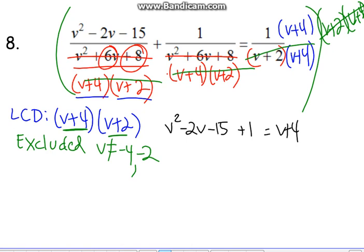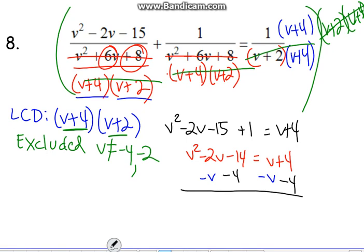Let's combine all our like terms. On the left side, we've got v squared minus 2v minus 14. On the other side, we've got this v plus 4. Let's go ahead and move those to this left side as well. Minus v minus v. I'm going to subtract the 4 as well.